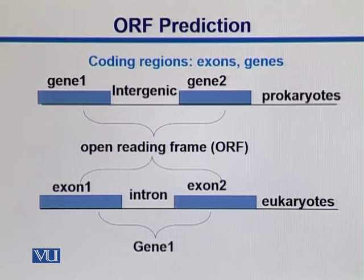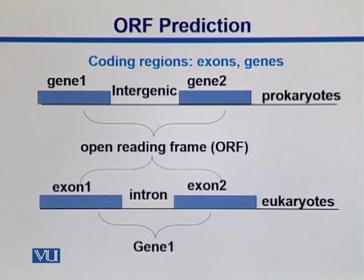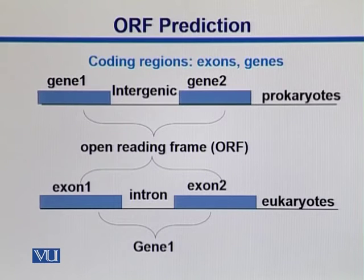So in the top part we have a longer ORF, and at the bottom part we have relatively shorter ORFs compared to the genome size — those shorter ORFs are actually spanning different exons.